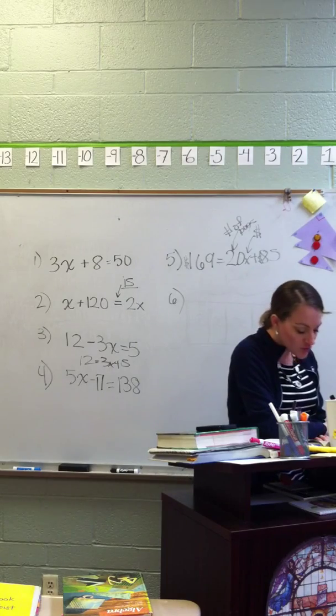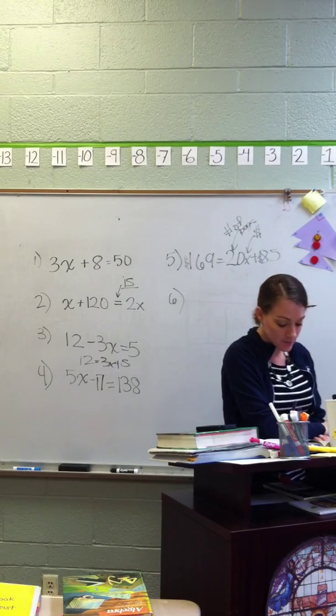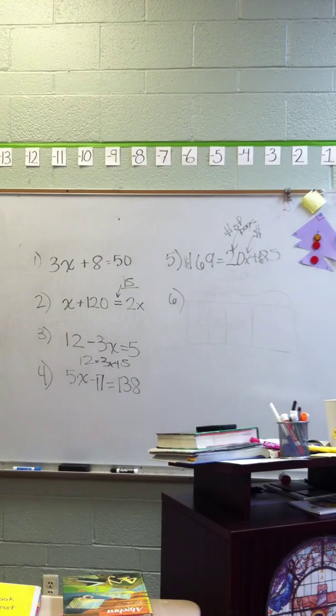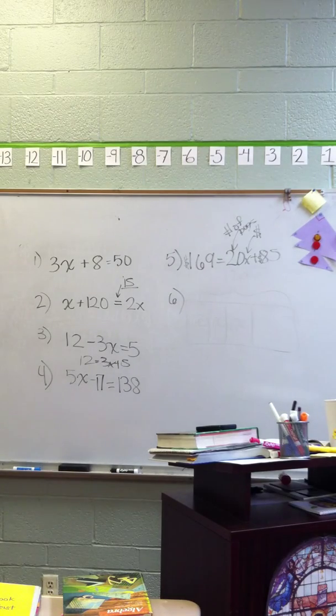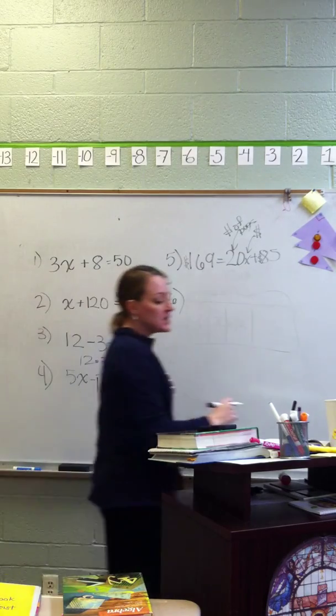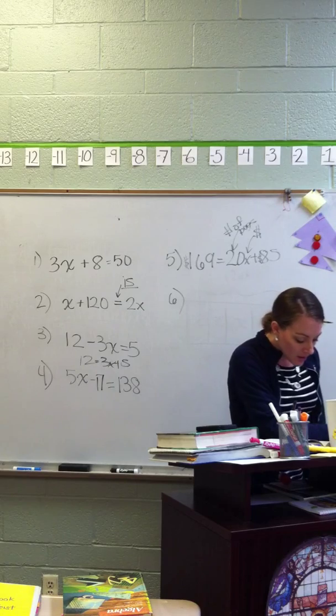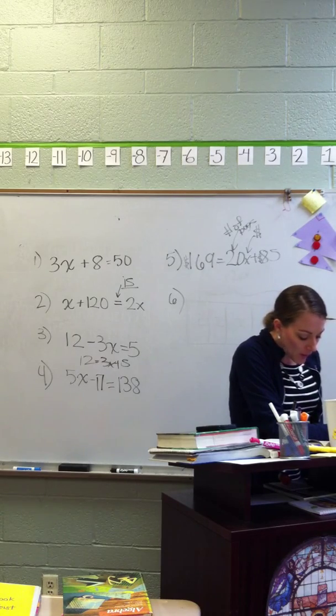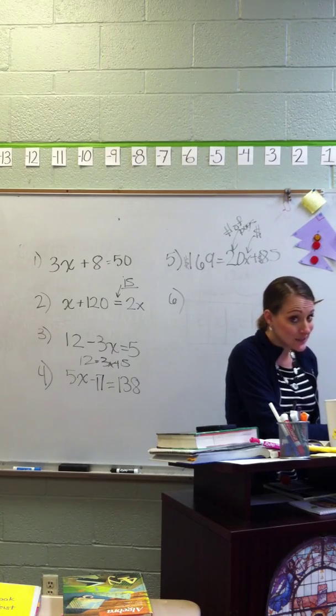And then number 6. Lou owes Rick $62. Perpendicular and parallel, you got to know what the slope relationship is. Alright. Number 6. Lou owes Rick $62.